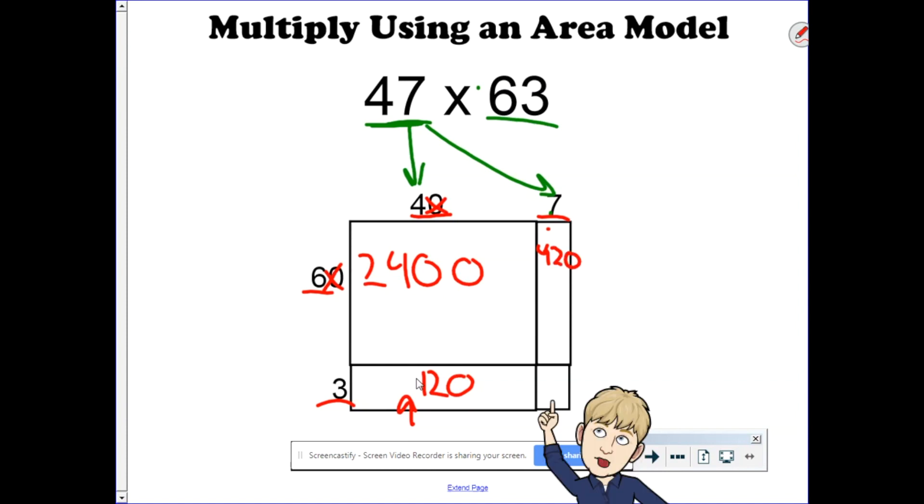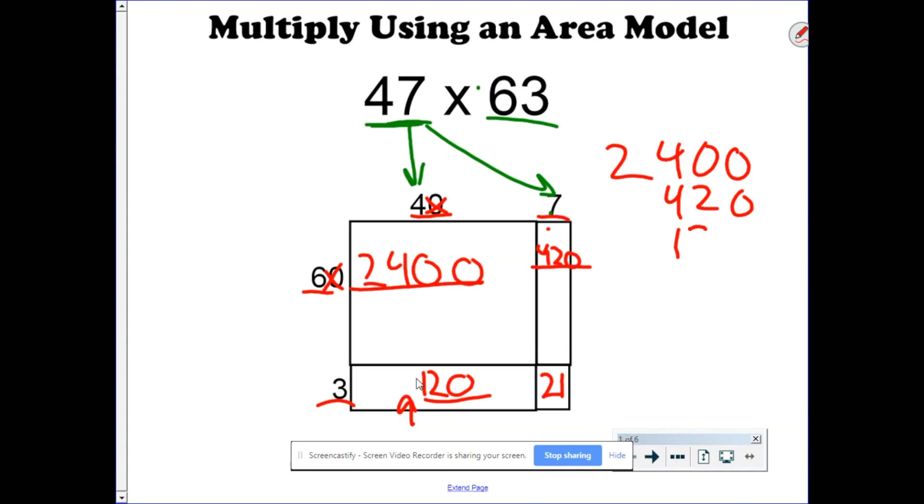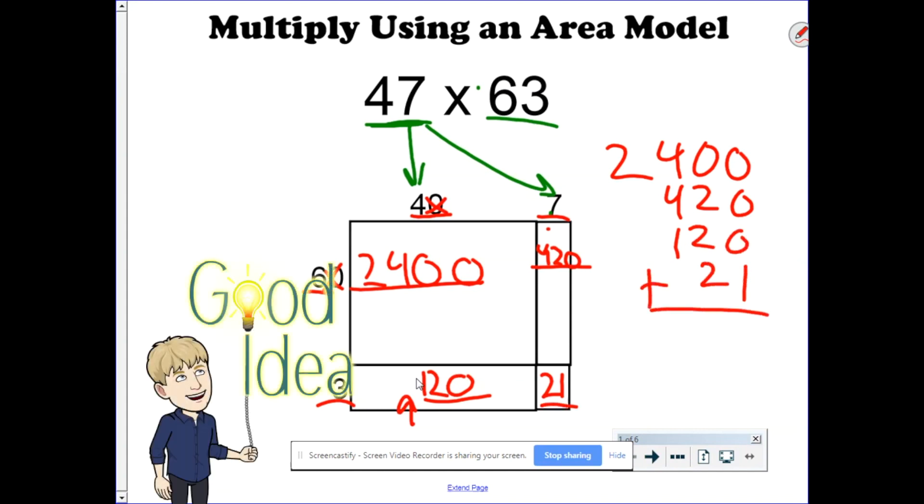And last but not least, 3 times 7 is 21. The next thing we do is add up all the numbers inside the boxes. 2,400, 420, 120, and 21. It's a good idea to either cross those out or underline them so that you know that you've used them.